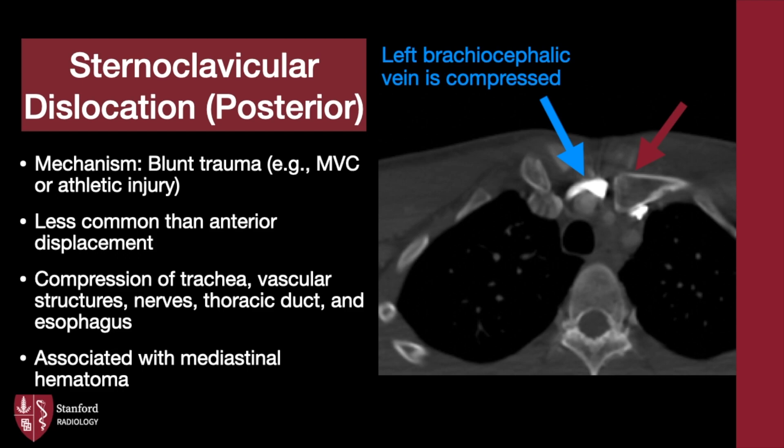The mechanism is usually blunt trauma, whether it is a motor vehicle crash or athletic injury. The posterior variety is less common than the anterior one, but the posterior variety demands surgical intervention. The clavicle may compress the trachea, vascular structures, nerves, thoracic duct, and esophagus. Commonly associated mediastinal hematomas further increase mass effect.